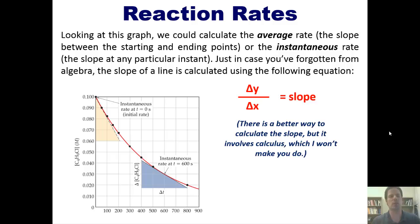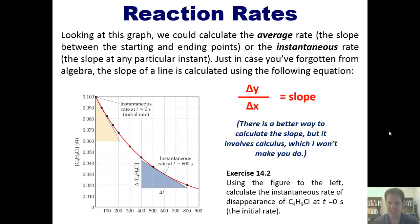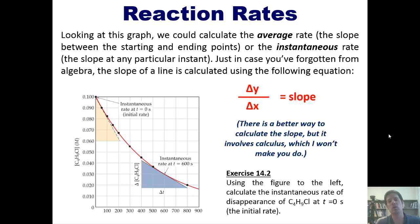That brings us to a lecture exercise. Use this figure to calculate the instantaneous rate of the disappearance of butyl chloride at t equals zero — that is, the initial rate. I'm not going to answer this question for you; I'll let you answer it on your own.